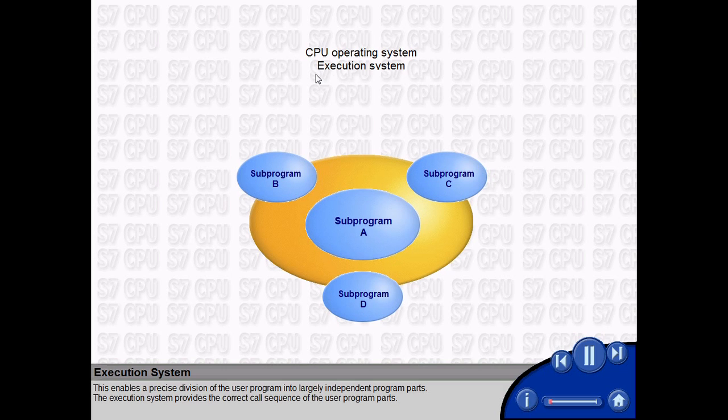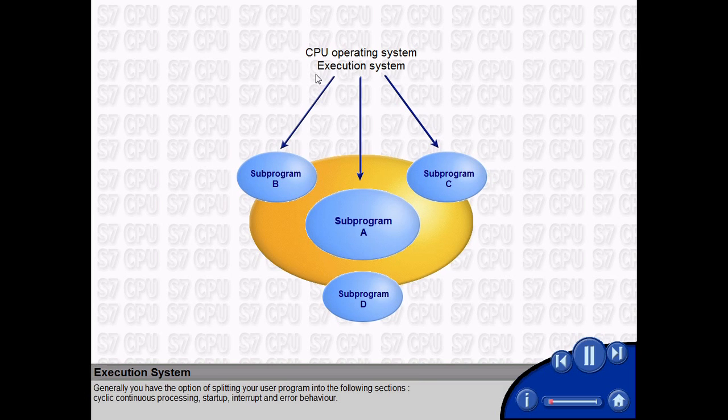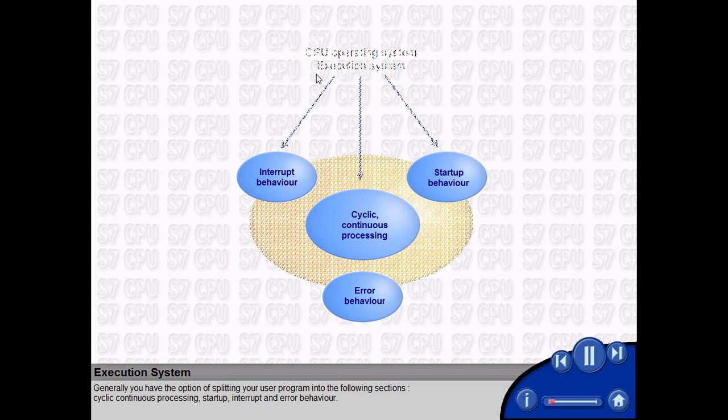The execution system provides the correct call sequence of the user program parts. Generally, you have the option of splitting your user program into the following sections: Cyclic Continuous Processing, Startup, Interrupt, and Error Behavior.